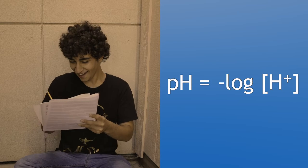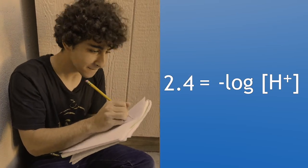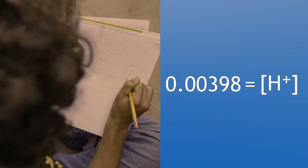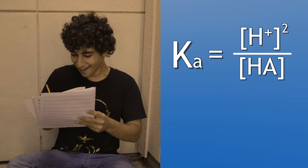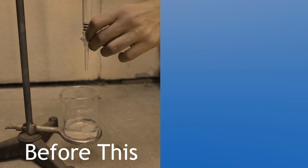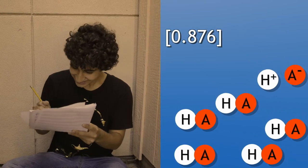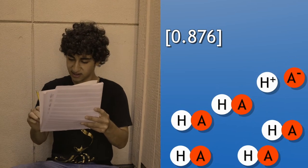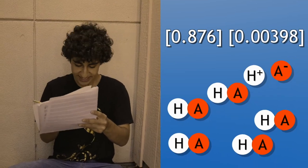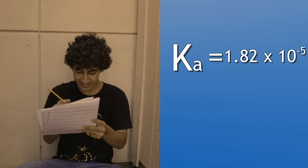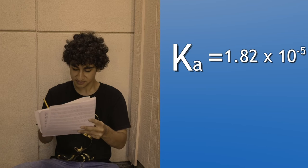Now you start solving the equation. To find the molarity of hydrogen ions, you just use the pH. The pH of 2.4 equals the negative log of the molarity of the hydrogen ions, so you calculate that the hydrogen molarity is 0.00398. Then you solve for the molarity of the undivided acid — keep in mind, you're calculating this for how the acid was originally, before you reacted it with the sodium hydroxide. You find the total molarity of the acid, 0.876, minus the molarity of the tiny bit that was naturally dissociated, which is the molarity of the hydrogen: 0.00398. You subtract and find the molarity of the undivided acid, then plug everything into the equation and calculate the Ka value of this mystery acid to be about 1.82 times 10 to the negative 5.